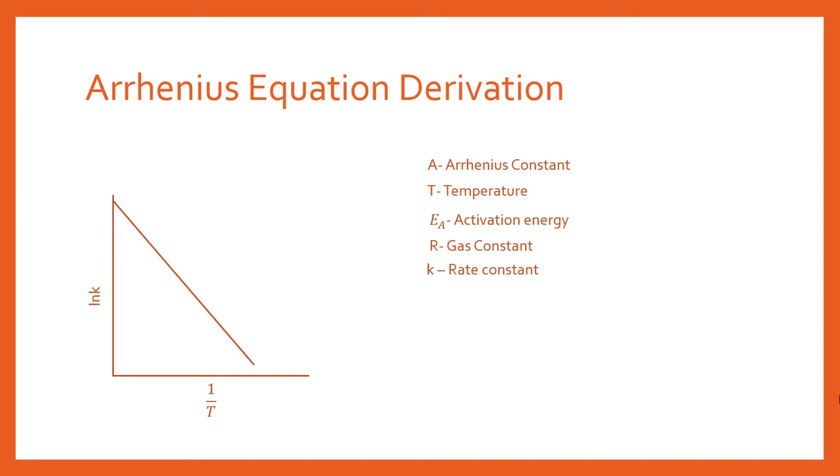In science, whenever you plot two sets of data and get a very perfect straight line, that is telling you that something interesting is going on.